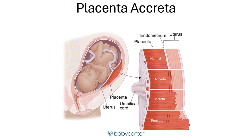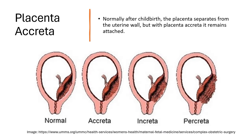In percreta there is the deepest invasion of the placenta into the uterine wall. You can see the contrast clearly: the lighter-colored structure represents the uterus and the red structures represent the placenta, showing how it gets progressively deeper — from normal placenta to accreta, increta, and percreta. Normally after childbirth the placenta separates from the uterine wall, but with placenta accreta, because it is embedded too deeply, it remains attached.